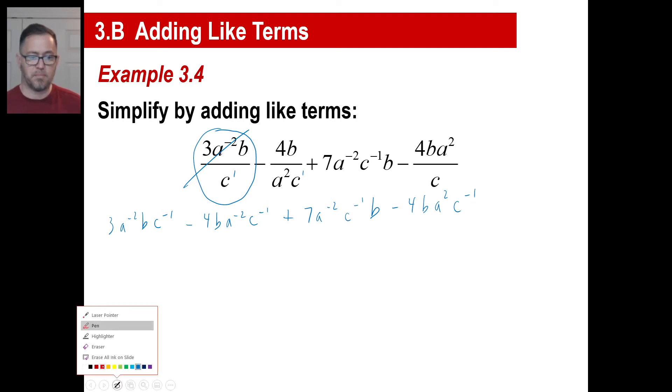Plus, notice this is already ready the way it is, so I'm going to keep that the way it is. And then this last one is my 4, I got a b, I got an a², and then the c goes up and becomes c^(-1). Now our question is, which one of these things match? Let's just start at the very left. I got a^(-2), b, and then c^(-1). a^(-2), b, and then c^(-1). Well these are like terms, we can get those together. Let's check the next one. a^(-2), c^(-1), and then b. That's also a like term.